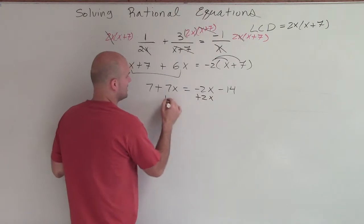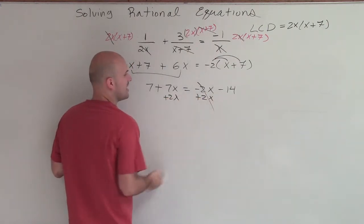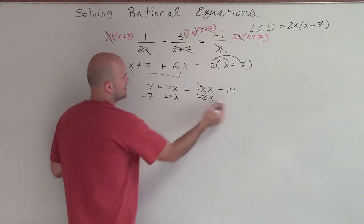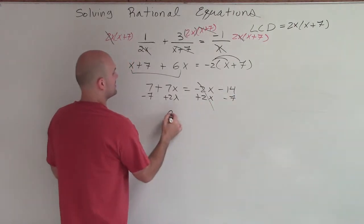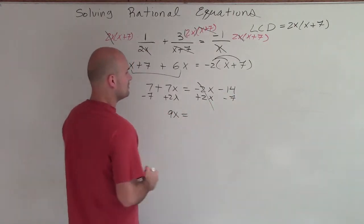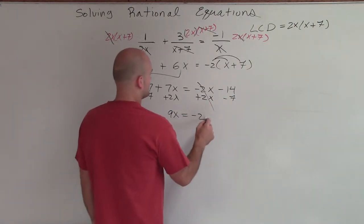So therefore, I'm just going to add the 2x here to both sides. That's going to add up to 1. And then I'll subtract the 7 on the other side. So therefore, I'm left with 9x equals a negative 21.